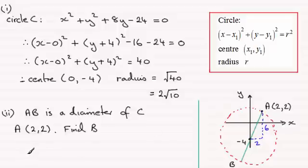So I can see that the point B has coordinates (-2, -10). All right.